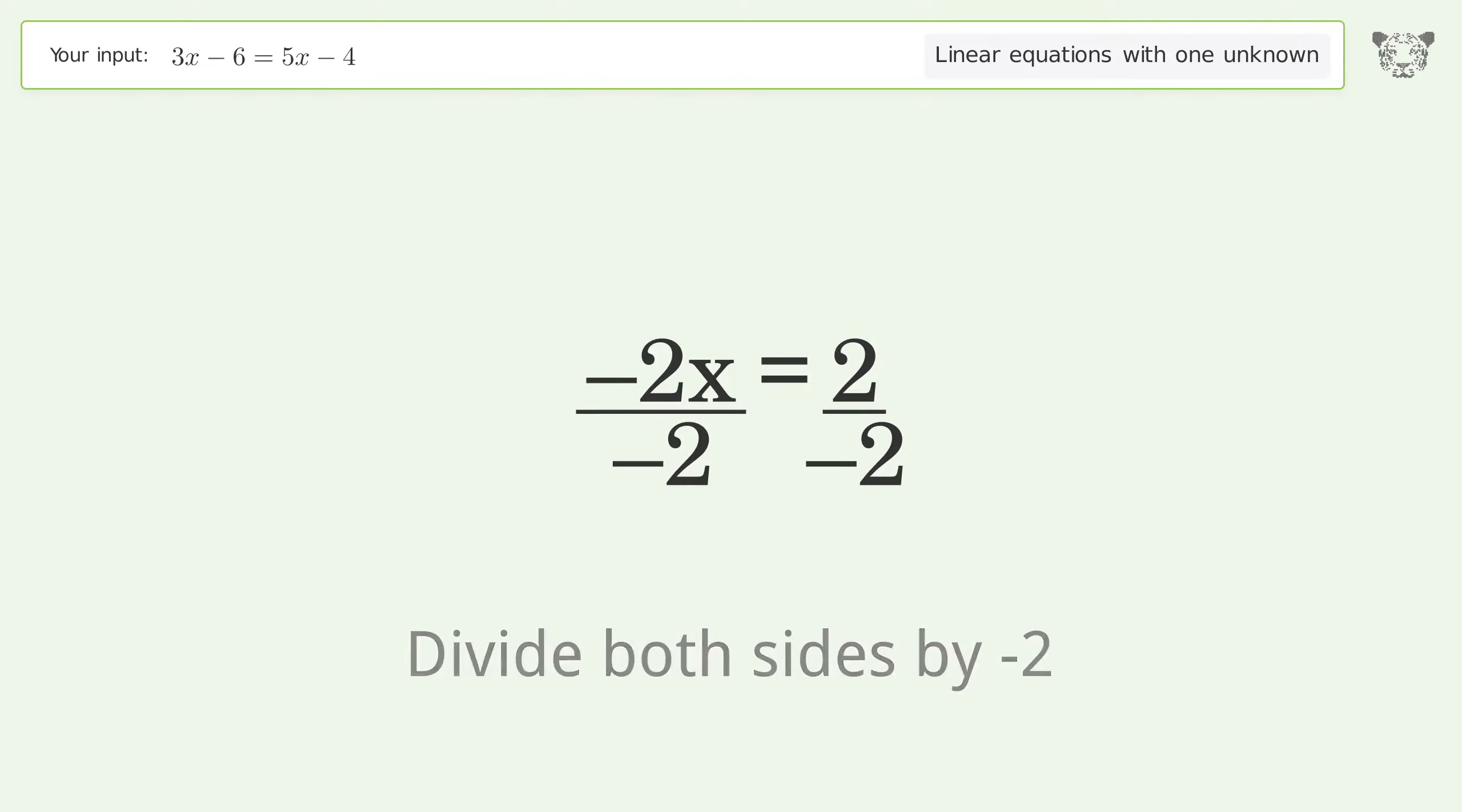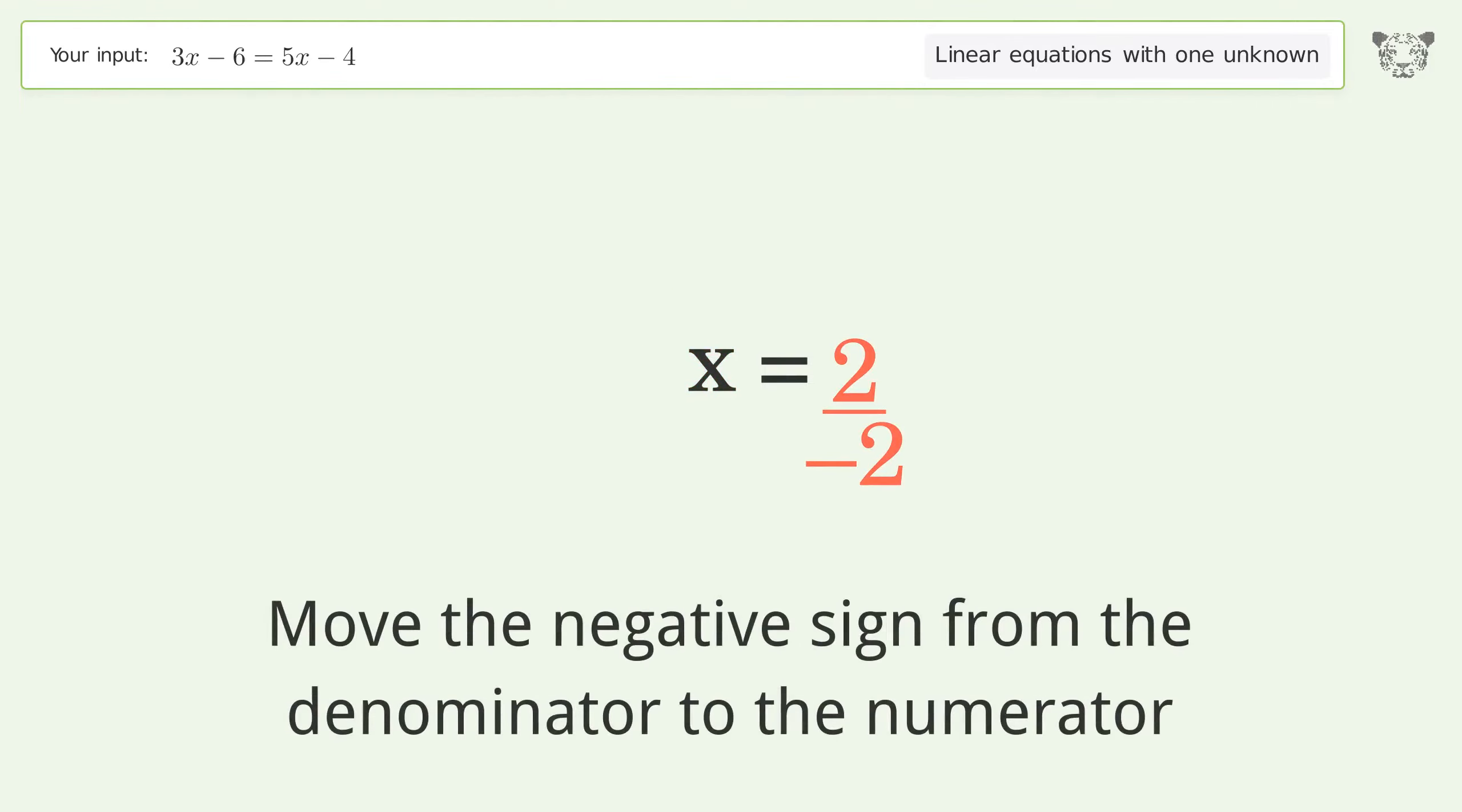Isolate the x. Divide both sides by negative 2. Cancel out the negatives. Simplify the fraction.